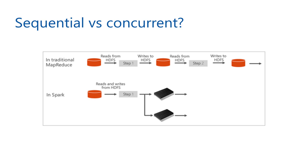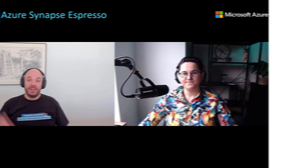On the flip side, concurrent data processing is about executing multiple tasks at the same time, which can speed things up quite a bit. This approach is super useful in big data processing, where we can break data into smaller chunks and process them simultaneously.